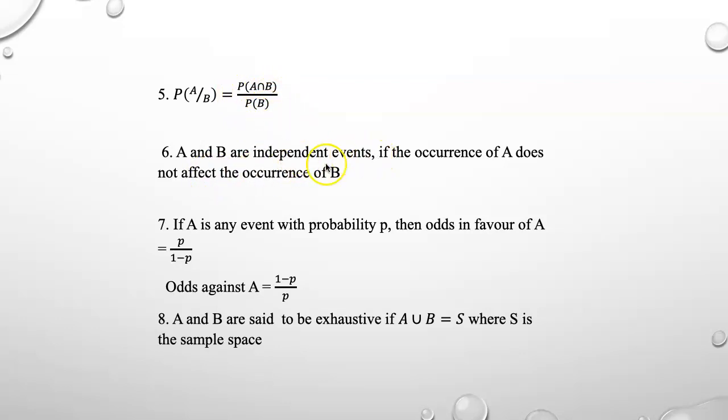A and B are said to be independent events if the occurrence of A does not affect the occurrence of B.